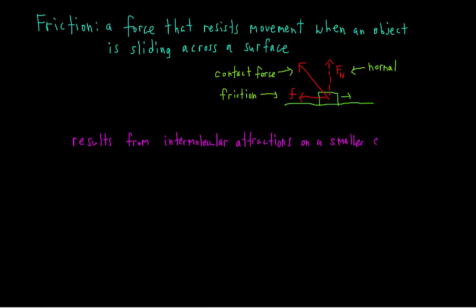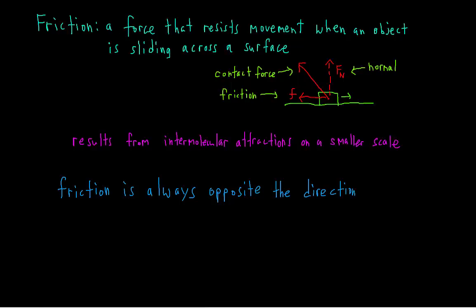The reason a brick on a table doesn't fall through the table is because all the electrons in the atoms of the brick and the table are repelling each other. As you'd expect, friction is always opposite the direction of motion. If an object is moving to the right across the surface, then friction is going to be pointing to the left. If an object is at rest and you're trying to push it to the right, then friction is still going to be acting to the left — it's always trying to resist the motion.